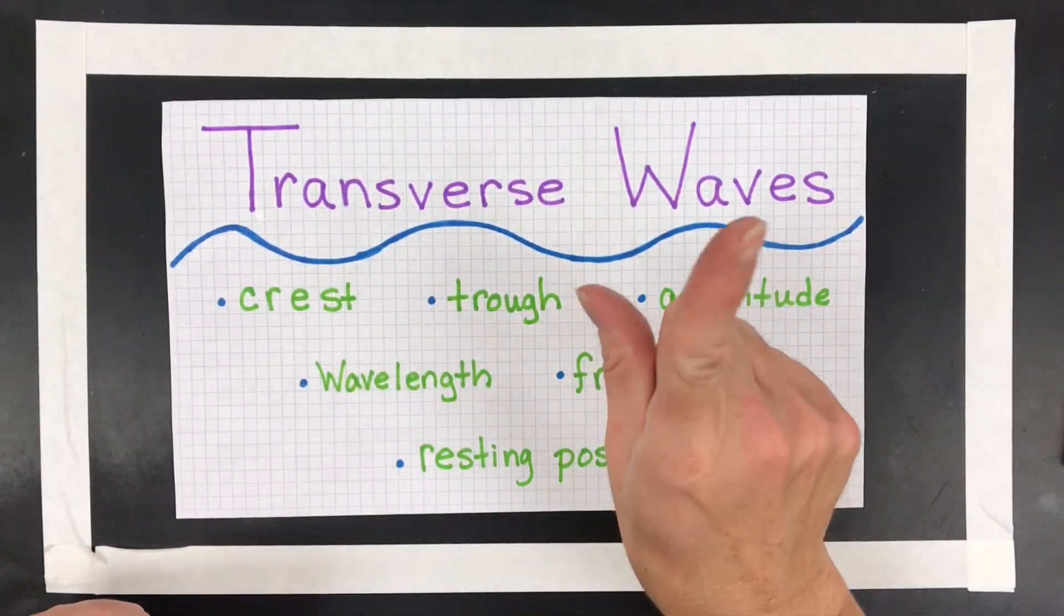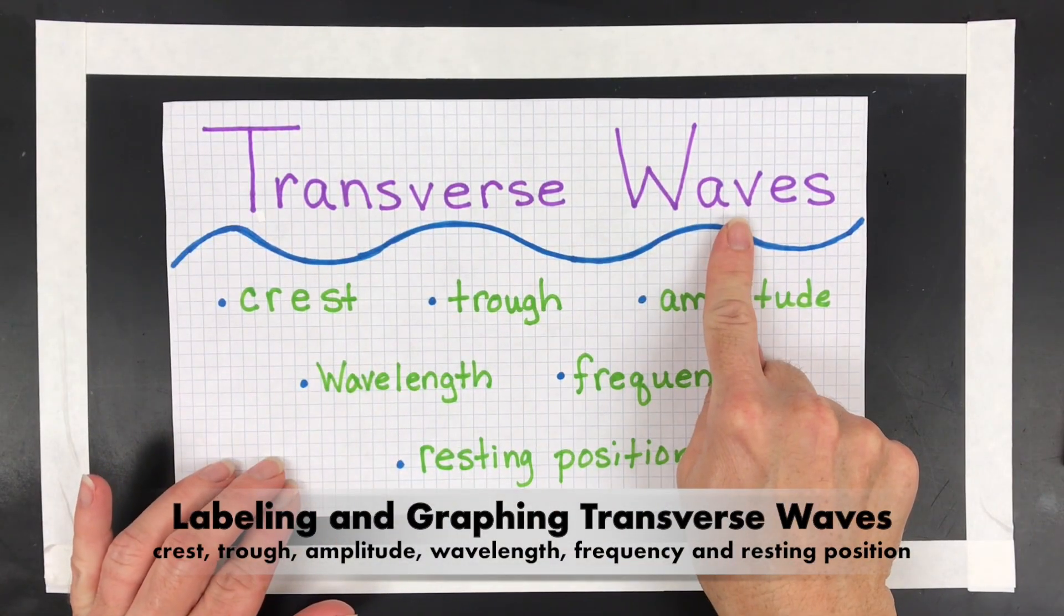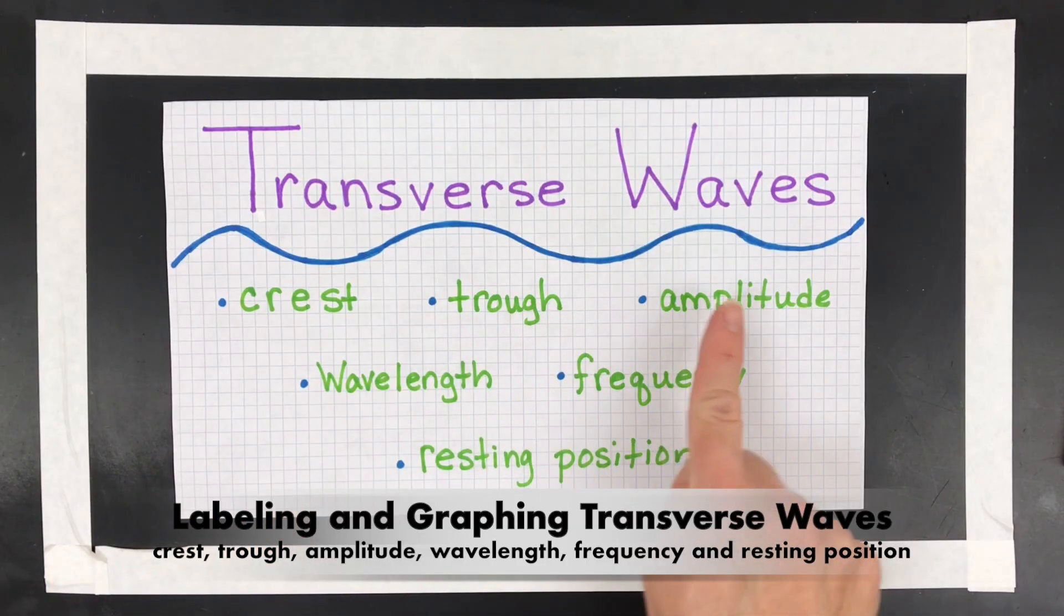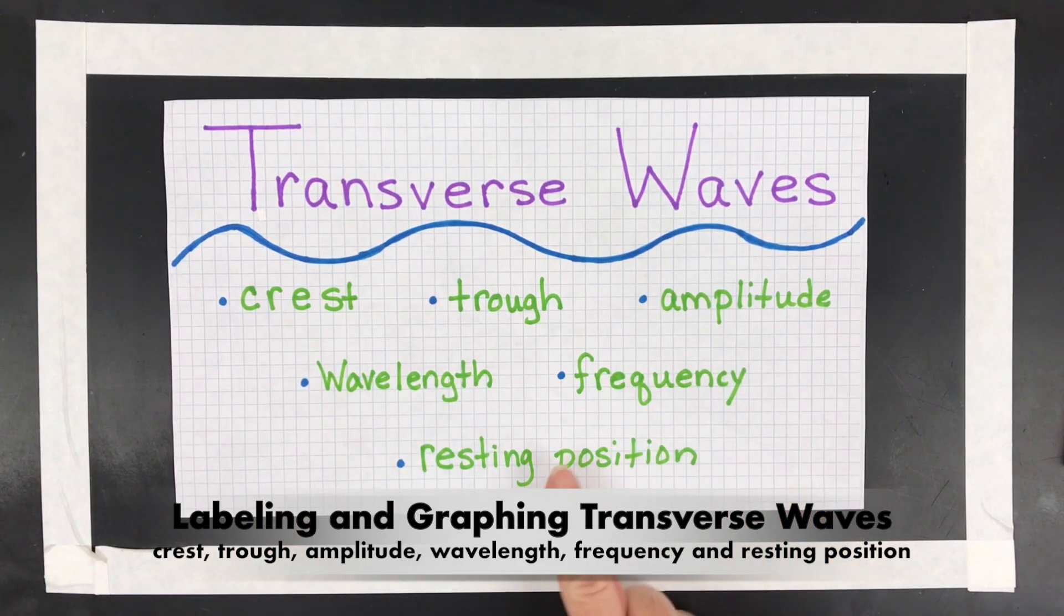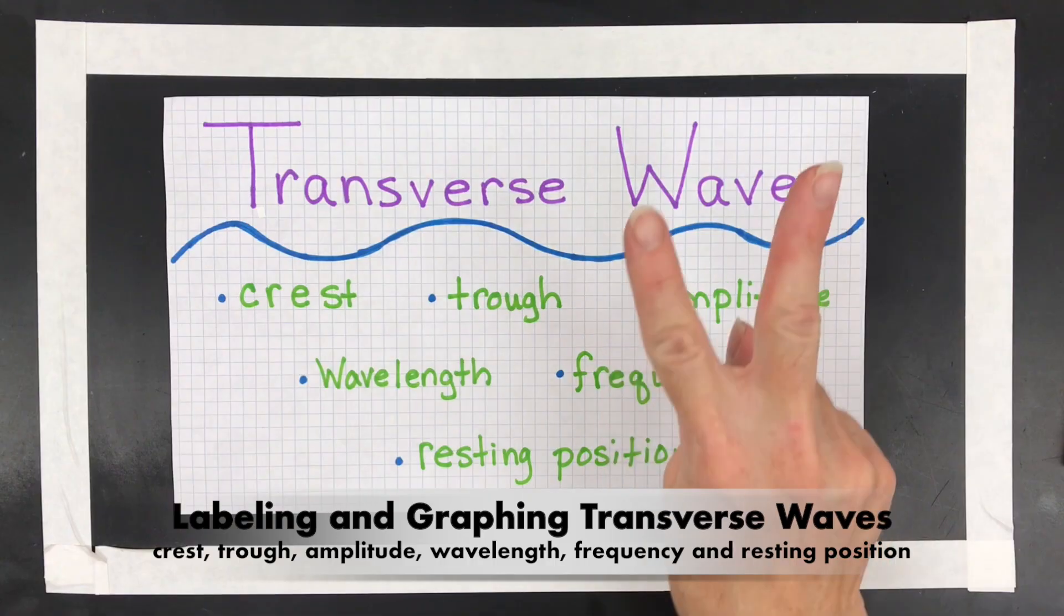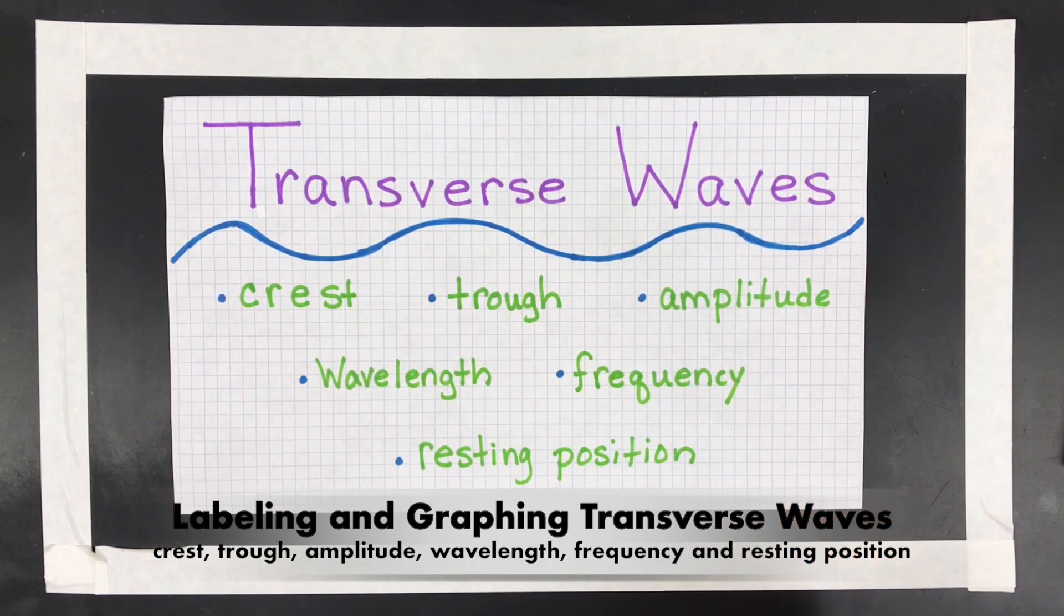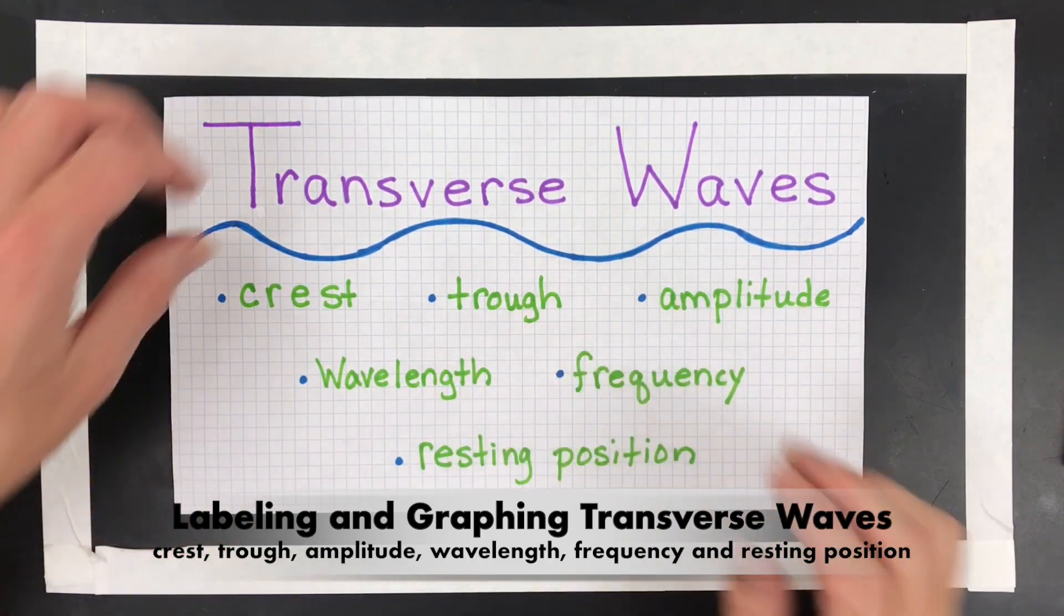In this video, I'm going to go through two things. One, how to label a transverse wave with crest, trough, amplitude, wavelength, frequency, and the resting position. The other thing I'm going to do is show you how to graph a transverse wave. So let's get started with the labeling first.